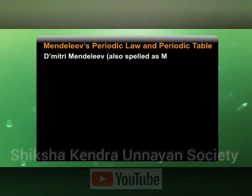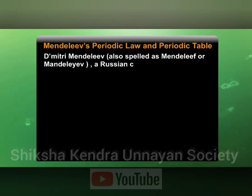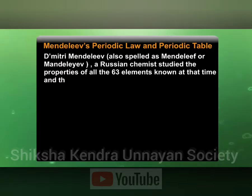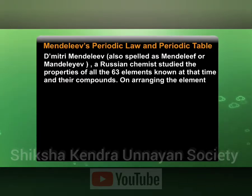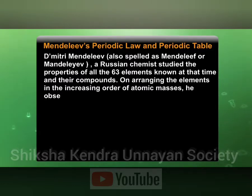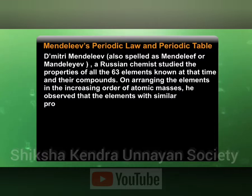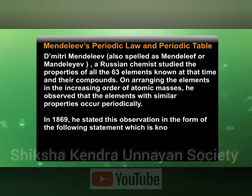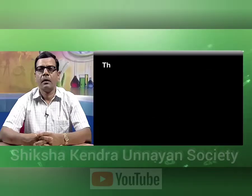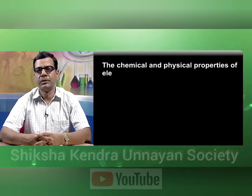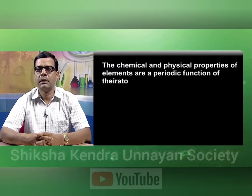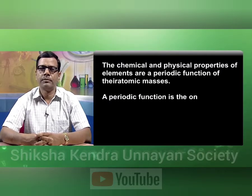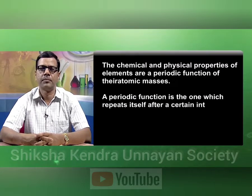Dmitri Mendeleev, a Russian chemist, studied the properties of all the 63 elements known at that time and their compounds. On arranging the elements in increasing order of atomic masses, he observed that elements with similar properties occur periodically. In 1869, he stated this observation in the form of the following statement, known as Mendeleev's periodic law: the chemical and physical properties of elements are a periodic function of their atomic masses. The periodic function is the one which repeats itself after certain intervals.